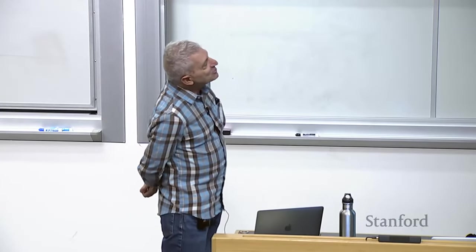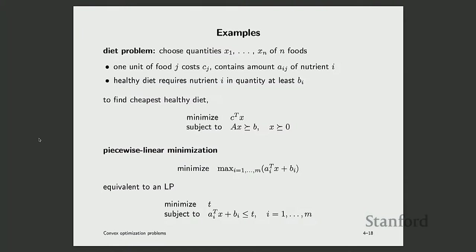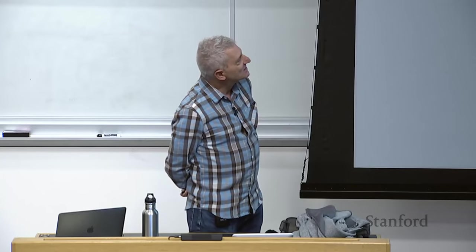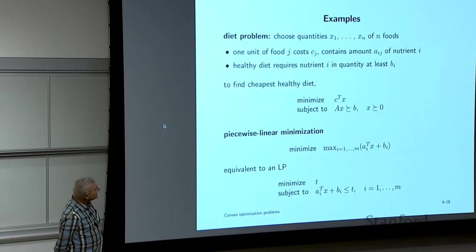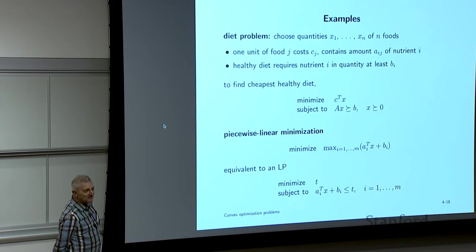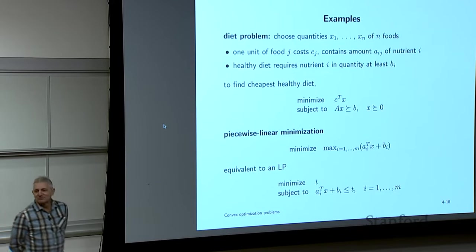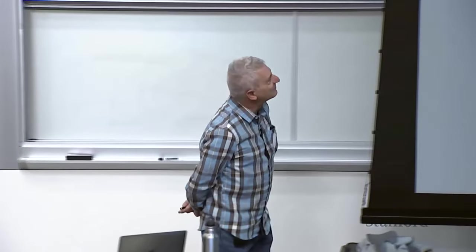The first historical example is the diet problem from the 1940s or 50s, allegedly from the military: how do you construct a diet that keeps soldiers alive as cheaply as possible?